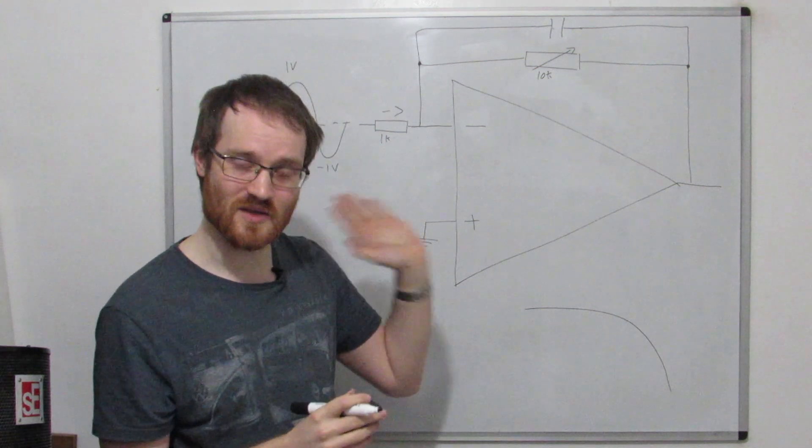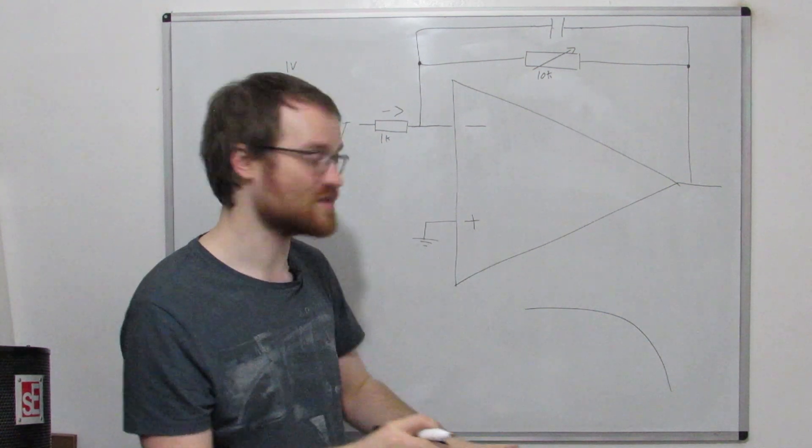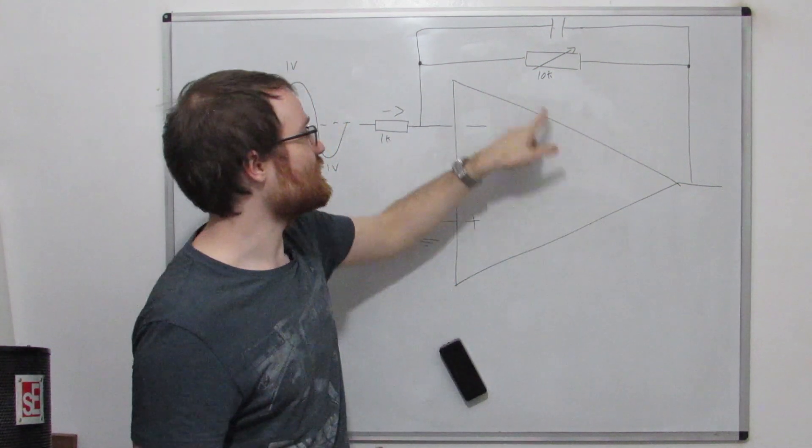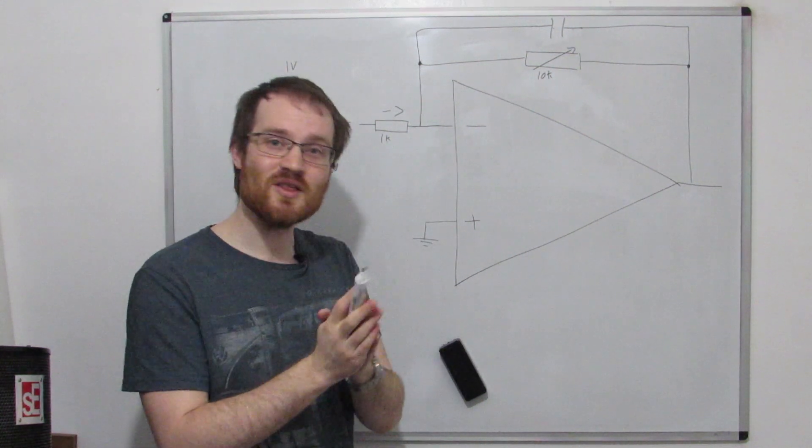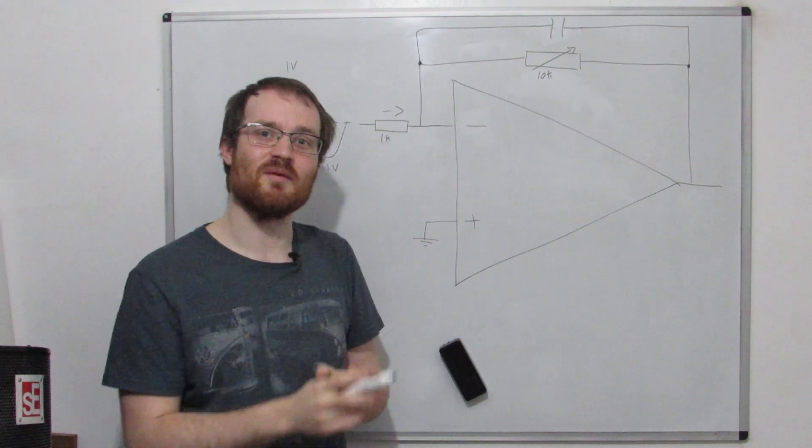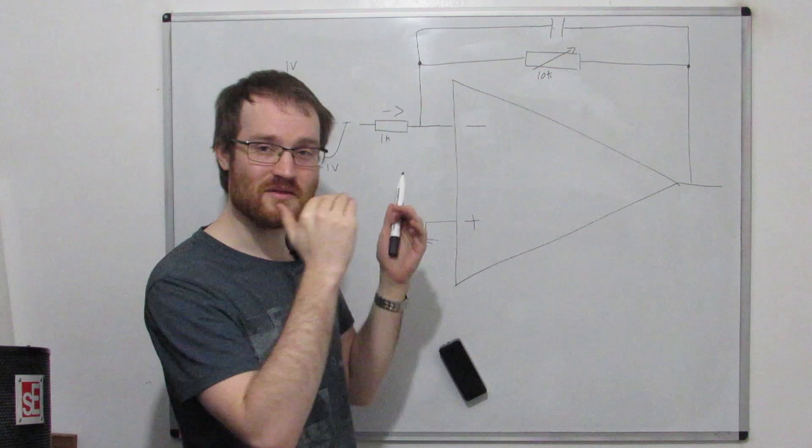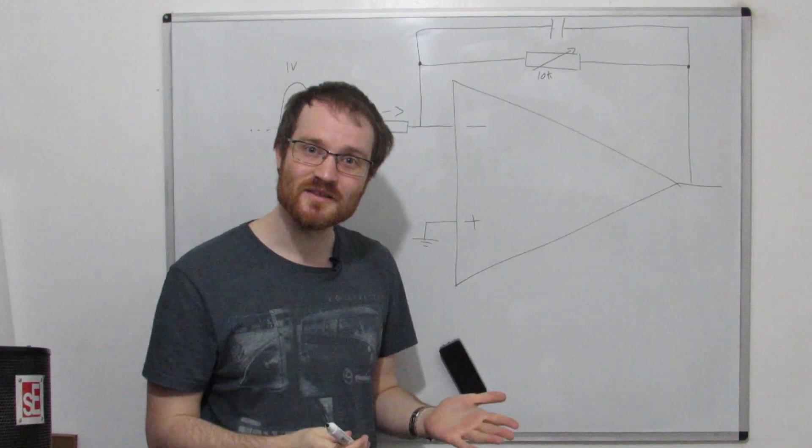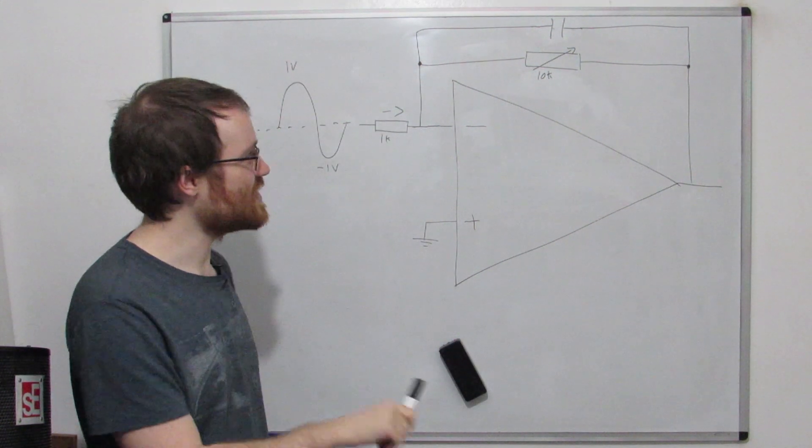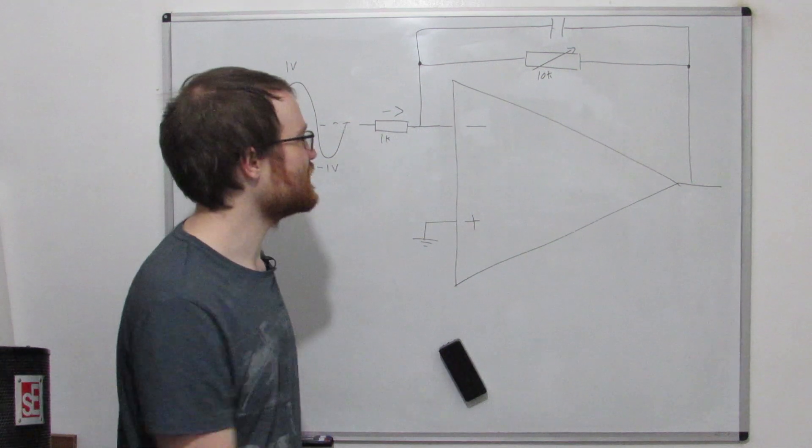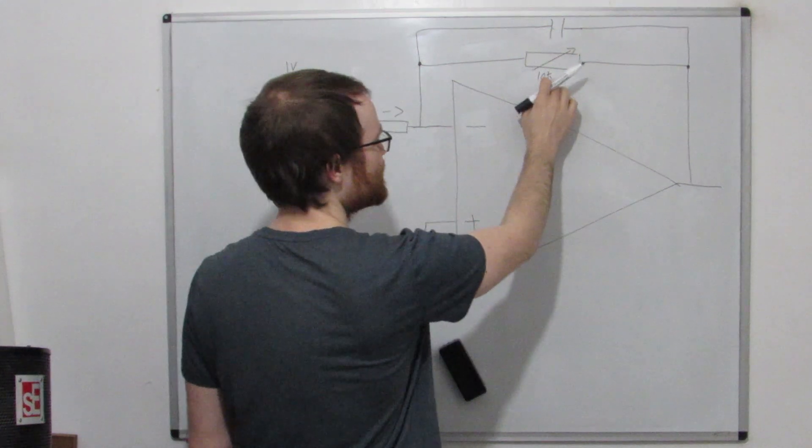And we call that point the 3dB point, and again I'm not going to go into it now because I've done my Circuits 101 video where I go through all of this stuff. The point I'm trying to make is that if you vary this resistor, you can change the point at which those two resistances become comparable, and that sets the threshold for the filter.